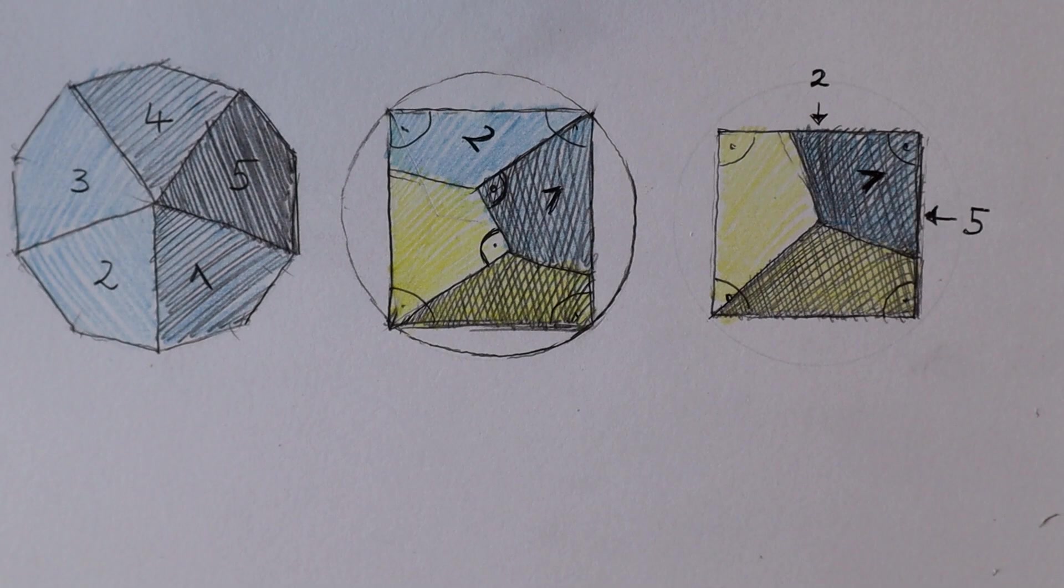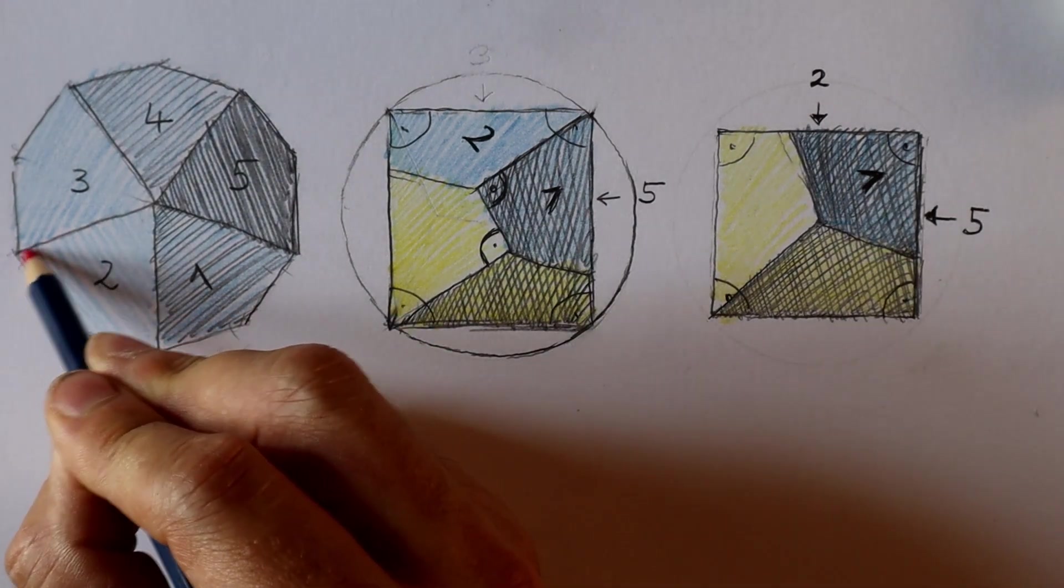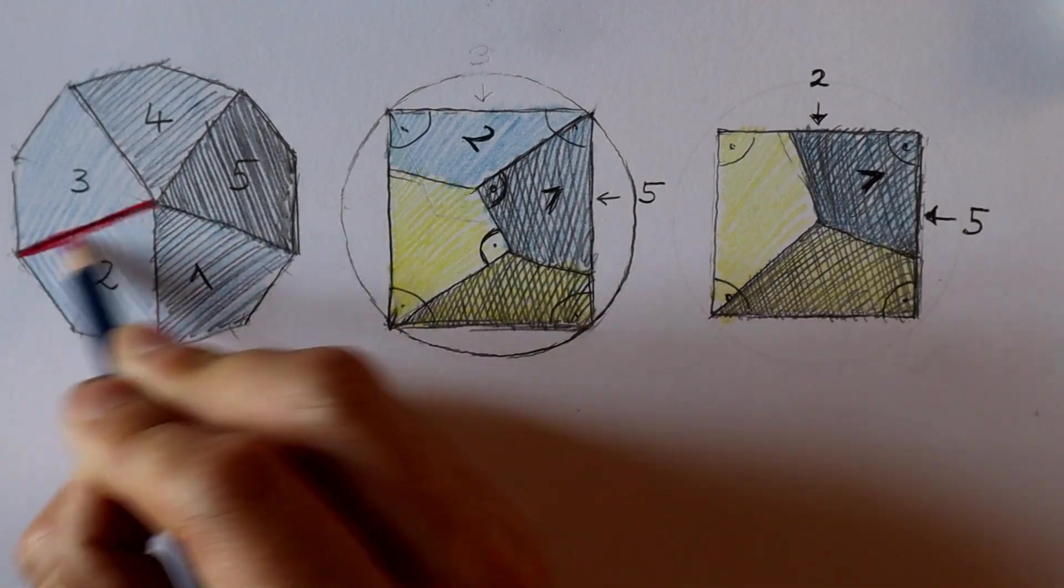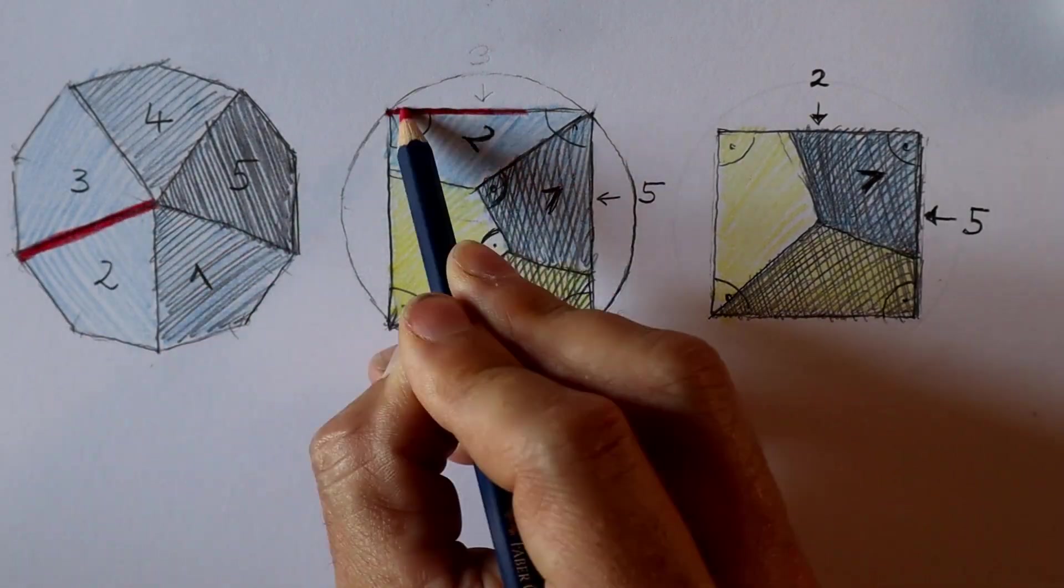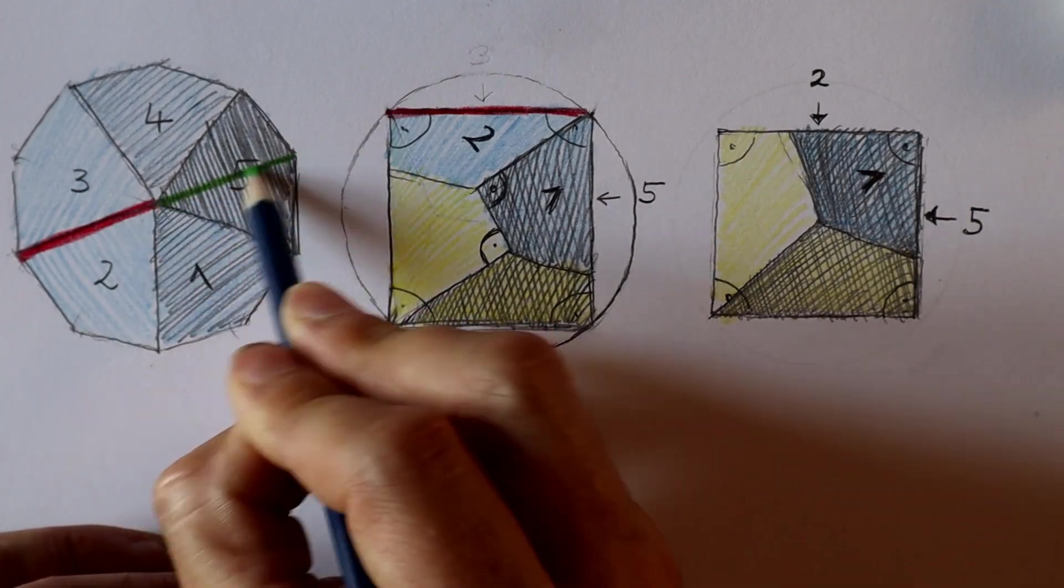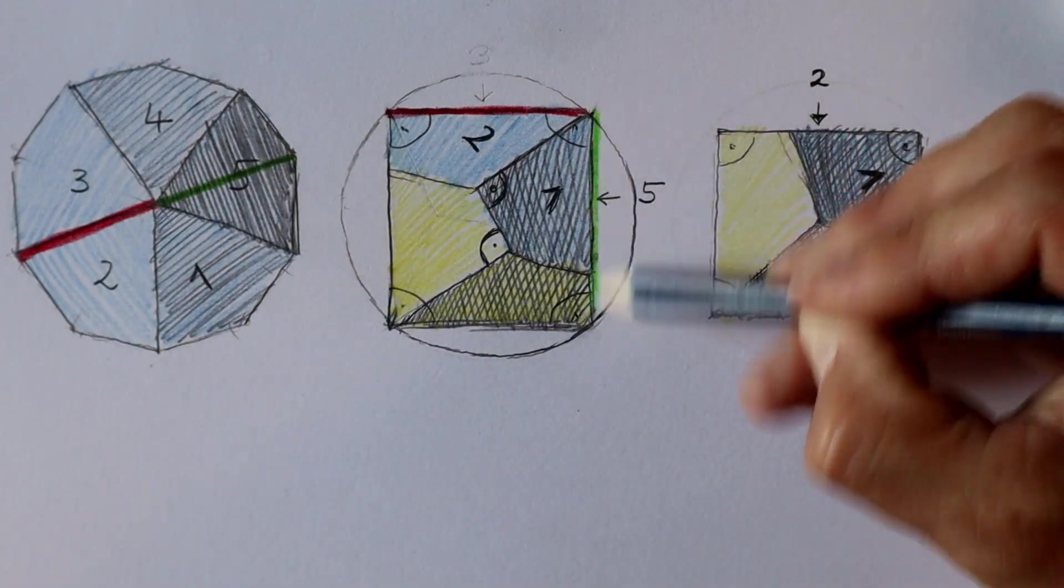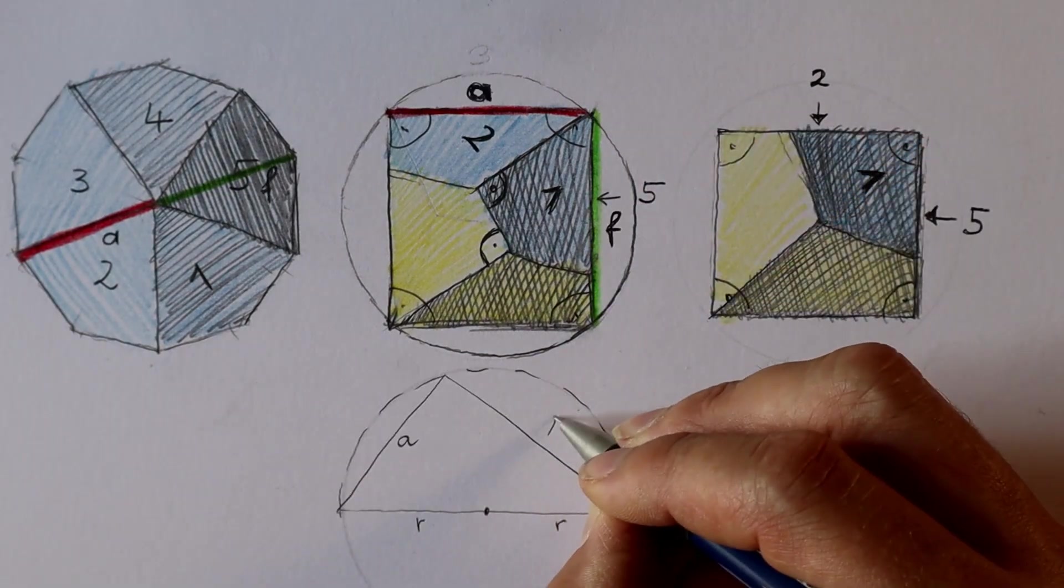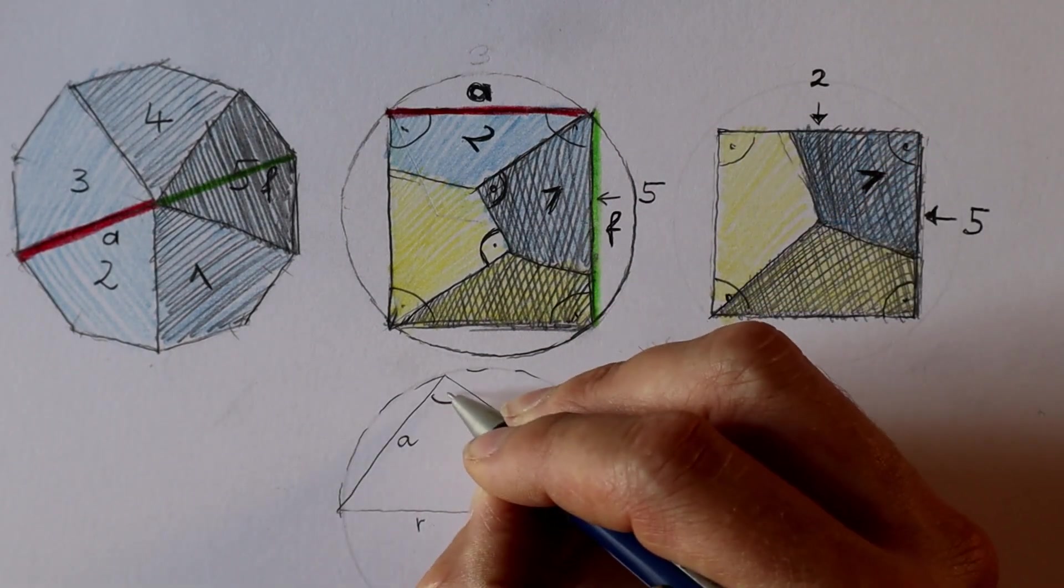But why are surfaces 2 and 5 perpendicular to each other? Because the edge drawn in red here and the diagonal drawn in green here are perpendicular to each other. They are the sides of the rectangle I described before.